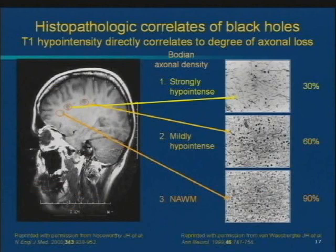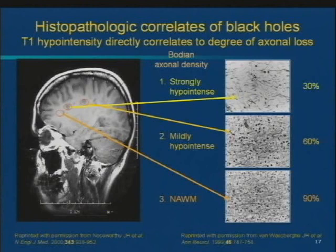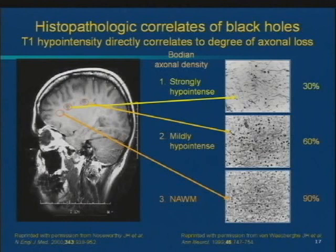Over time you get lesions — several of these dark lesions visible where the circles are on this brain section. If you had a pathology specimen, you could look at the brain under the microscope. In an area that looks normal on the MRI scan, you'd have maybe 90% of the normal axon count. In an area that's slightly black, up to half of the axons may have been lost. In one that's really black, many more axons are lost. The blackness tells us how much damage has gone on in that part of the brain.